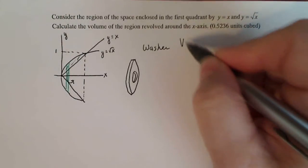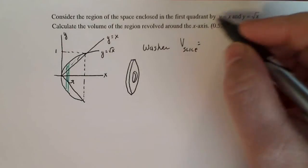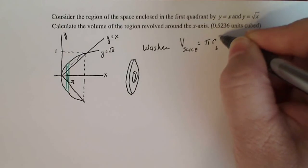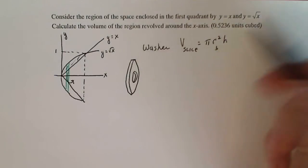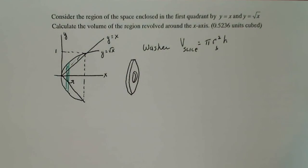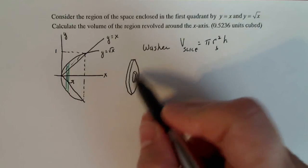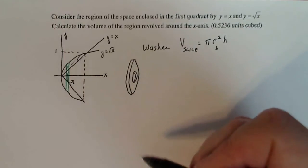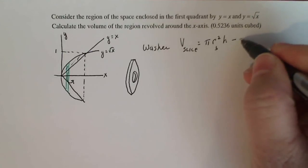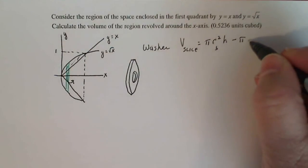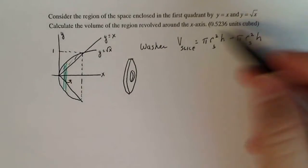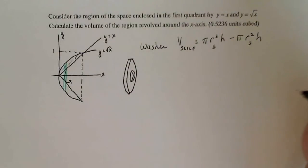If I want to find the volume of something that looks like a washer, the volume of my slice is going to be pi times the big radius squared times h — that's the volume of a cylinder, which this is. If you ignore the hole in the middle, you have a height and a round top, a real thin cylinder like a coin. But I have to take away the bit in the center — that's the hole — so minus pi times the small radius squared times h. H is the thickness of my washer, the thickness of my slice.